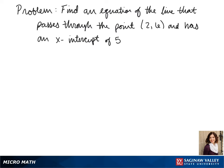So our x-intercept of 5 means that we know that it goes through the point 5, 0. From these two points, we can find our slope.